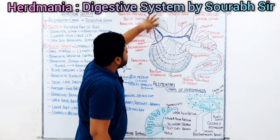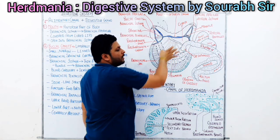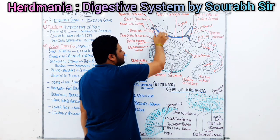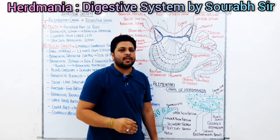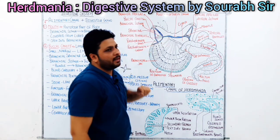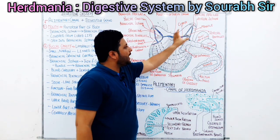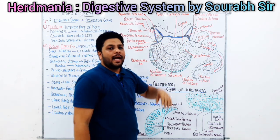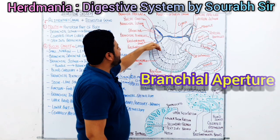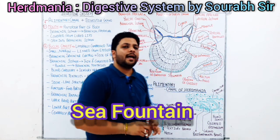The mouth position in Herdmania is above, as we can see — this is the branchial siphon and this is the atrial siphon. These are exactly the chambers. As we know about Herdmania, it is a ciliary feeder — water stream comes in through the branchial apertures and goes out through the atrial apertures. That is why it is called the sea fountain, and that is why it is called the siphon.